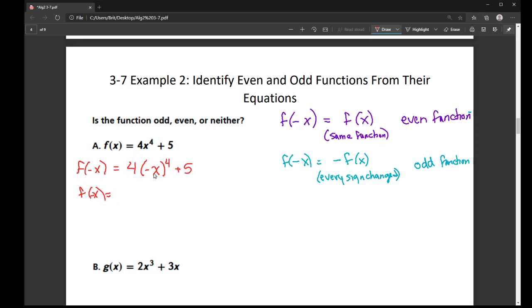Now a tip here is if the exponent is even, whatever sign it originally has is going to stay the same. So this is 4x to the fourth. And that's because if you take a negative times a negative, it comes out positive. And even exponents make you multiply pairs of negatives together. And then I have a plus five.